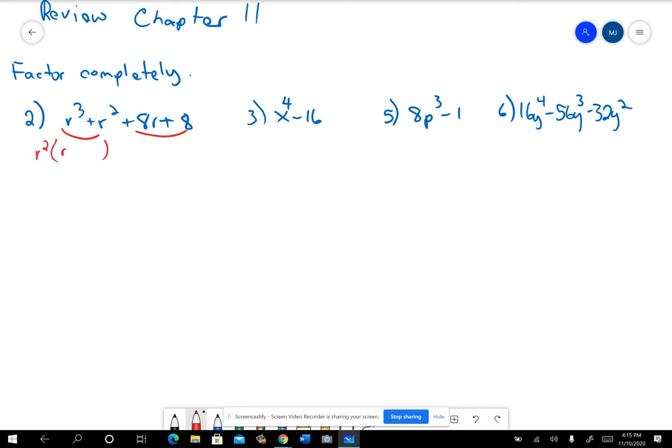So if I factored out the r squared, there'd be an r plus 1 left. If I factor out the 8, there'd be an r plus 1 left from there. And then that r plus 1 is common to both terms, so we'll pull that r plus 1 out of both of those, and then what's left is r squared plus 8. And that is a squared, but 8 is not a perfect square, and also that's a plus sign between them, so that can't break down anymore. And that's where you'd stop if it said factor completely.